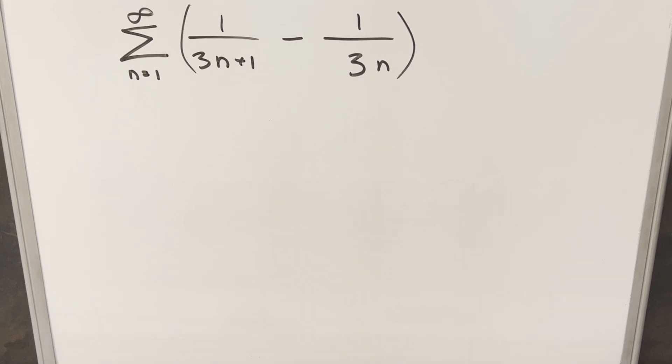We have an interesting sum: the sum from n equals 1 to infinity of 1 over (3n plus 1) minus 1 over 3n.